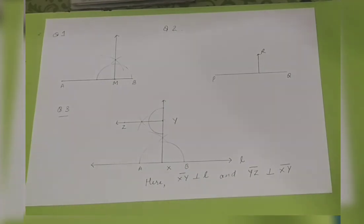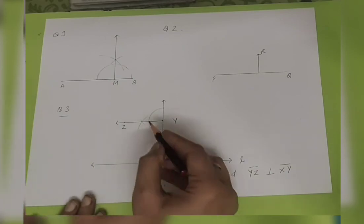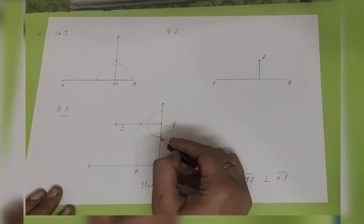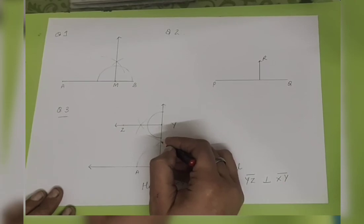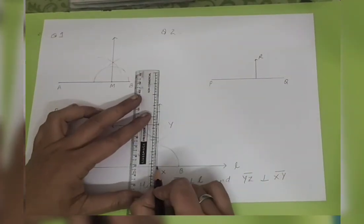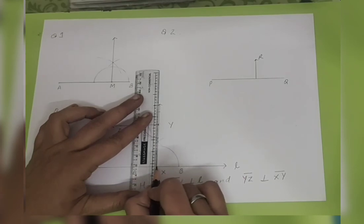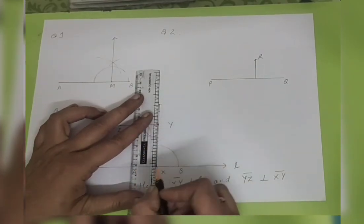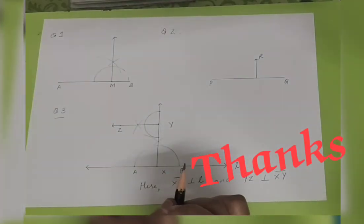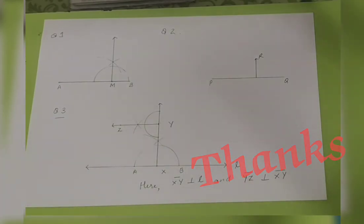I hope these three questions are clear to you — this will help you doing your questions. Practice more and more drawing these arcs and joining these points. I noticed many students are not able to join them properly — mark the exact point, place the ruler on the exact point, hold the pencil firmly, and then join. Make sure your line doesn't go away from the point. Thanks.